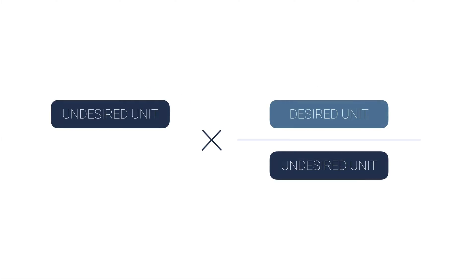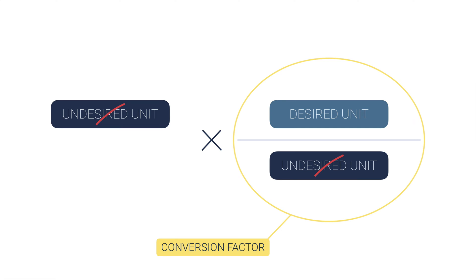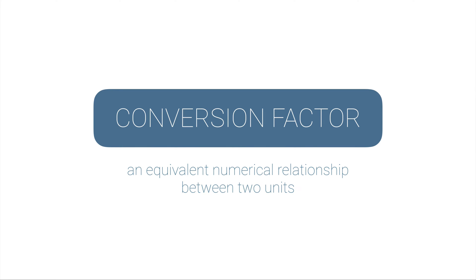Now this concept is integral to understanding how the factor-label method works. Factor-label method has you starting with a unit that you don't want and you want to cancel that unit out. And so you use a fraction to do that. This fraction is called a conversion factor and in particular it's set up so that your undesired unit is on the bottom of the fraction.